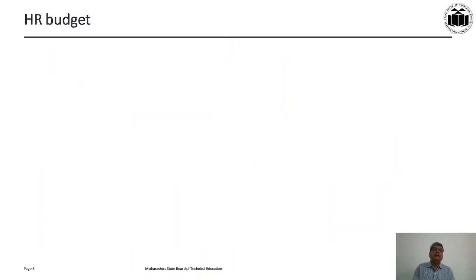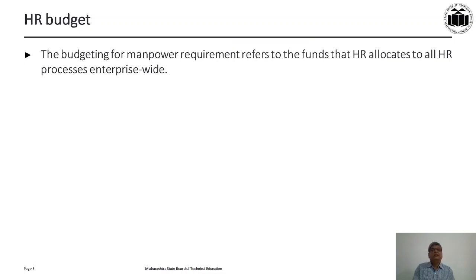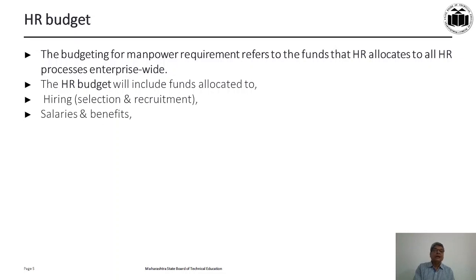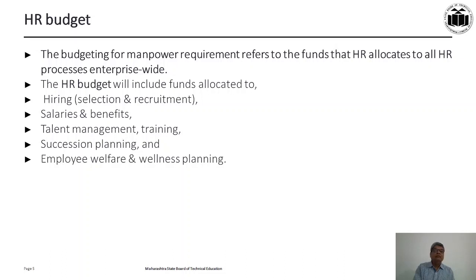Now we will understand HR budget. The budgeting for manpower requirement refers to the funds that HR allocates to all HR processes enterprise-wide. Budgeting means allocation of funds. The HR budget will include funds allocated to: one, hiring — that is selection and recruitment; two, salaries and benefits; three, talent management and training; four, succession planning; and five, employee welfare and wellness planning.